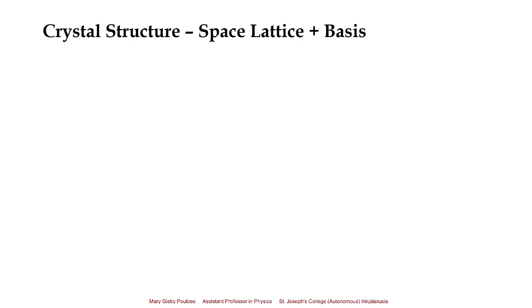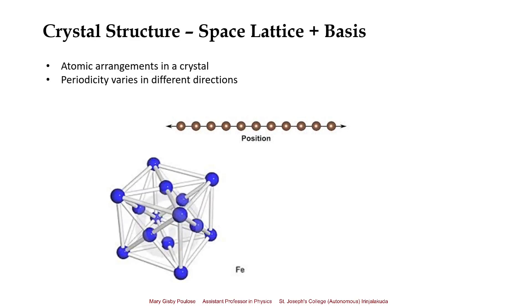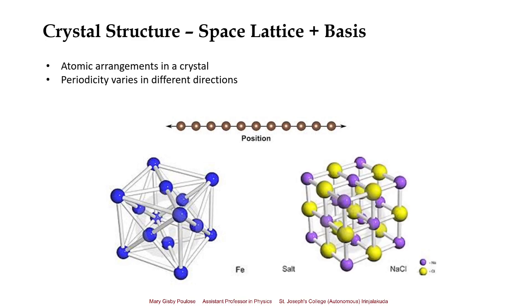From this we understand that crystal structure is basically space lattice plus basis. The crystal structure shows the different atomic arrangements in the crystal, and the periodicity varies in different directions. For a three-dimensional case, such as iron, the atoms are distributed on the lattice points. In sodium chloride crystals, the sodium ions and chlorine ions are alternatively placed on the lattice points.